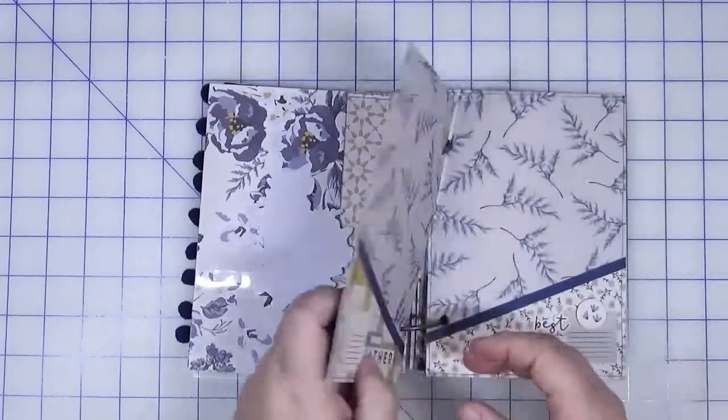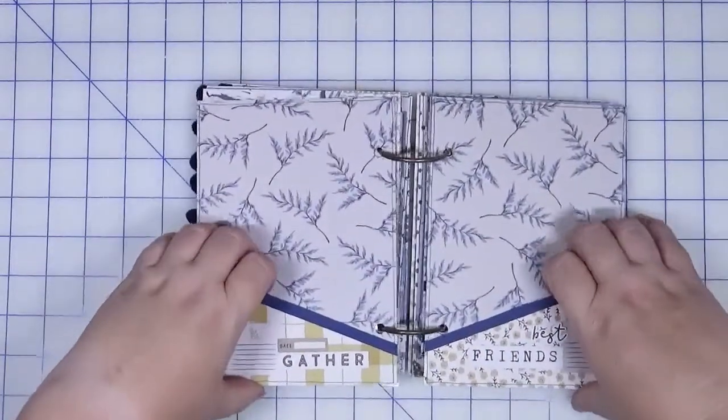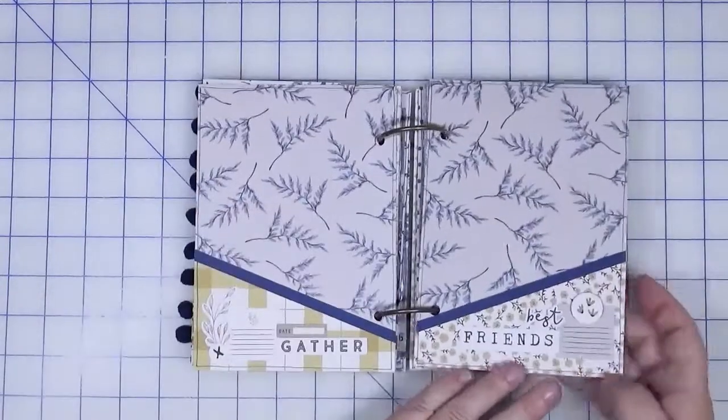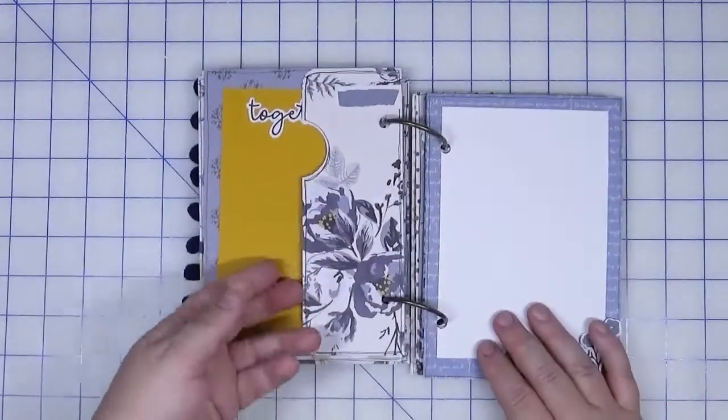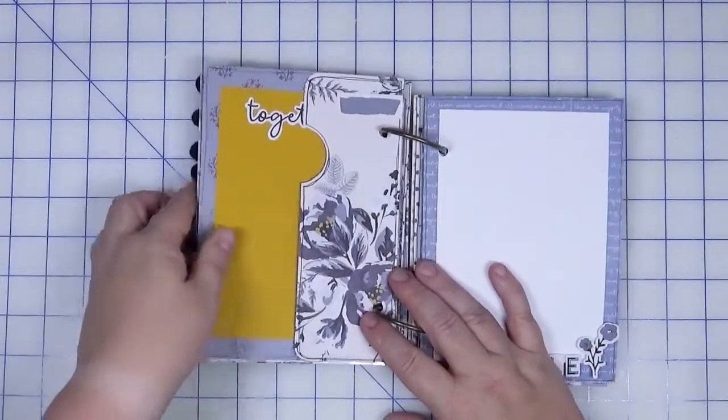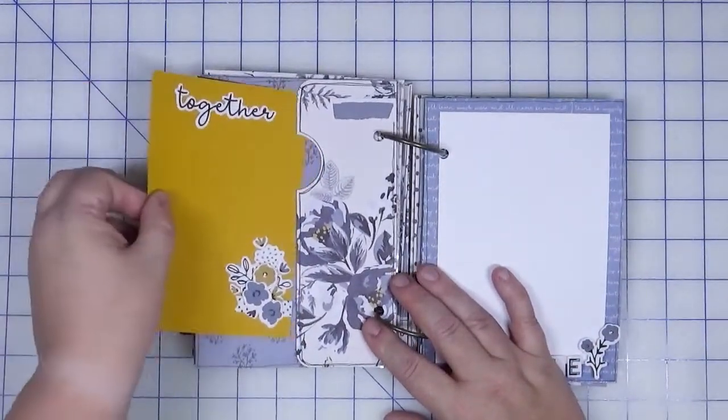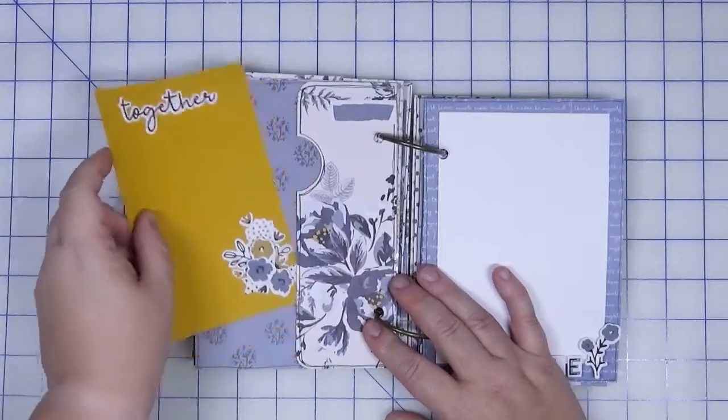Plain piece of paper and then we've got two diagonal pockets to insert pictures and journaling cards. This is also another pocket here and I do have a photo mat already tucked in.